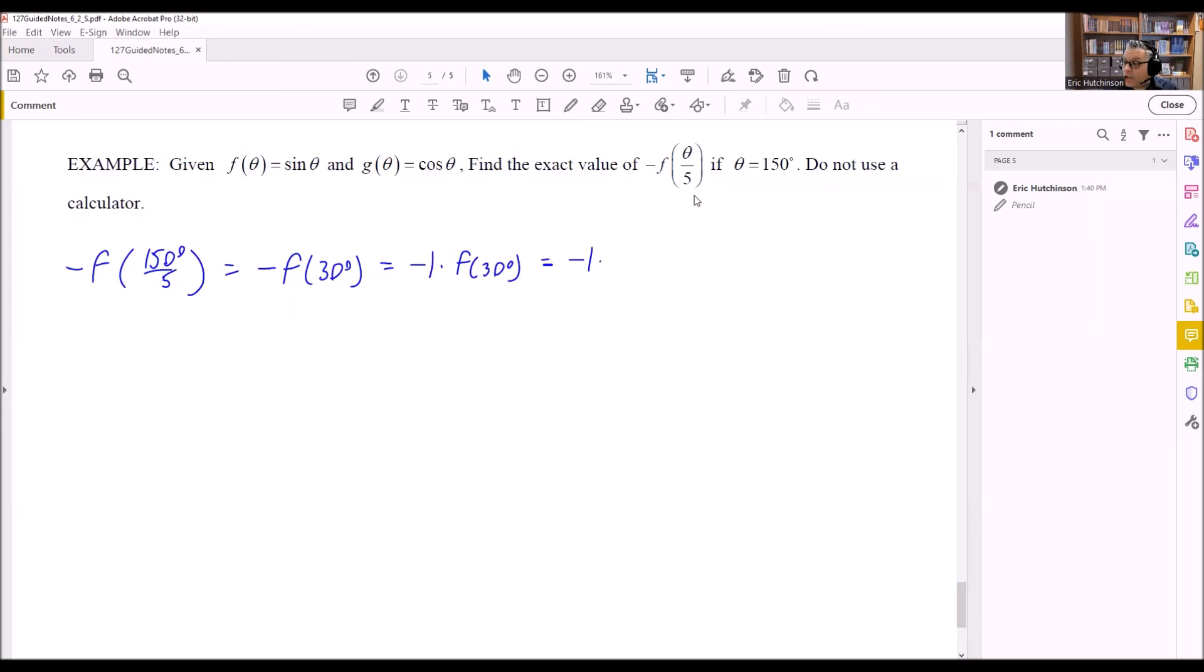So we have -1, and then instead of f(30°), I'm going to replace that with sin(30°) this time. Okay, so we're just putting it in again right here. We put f(θ), it's an f(30°), so we put 30 in the f equation here. f(30°) is sin(30°). Now sin(30°), we have to get that value from the unit circle.